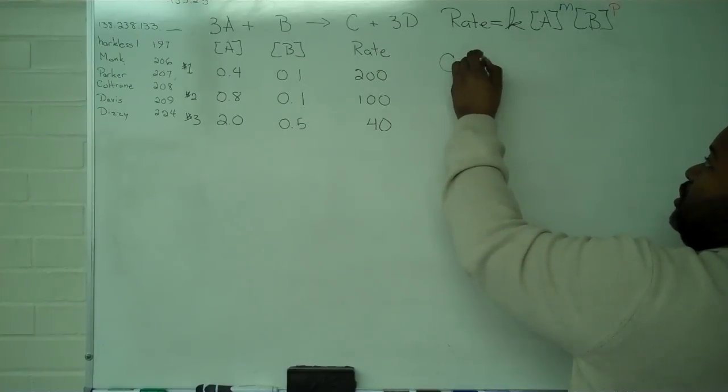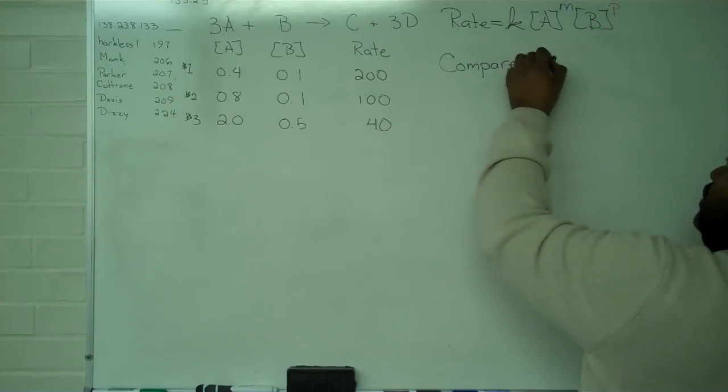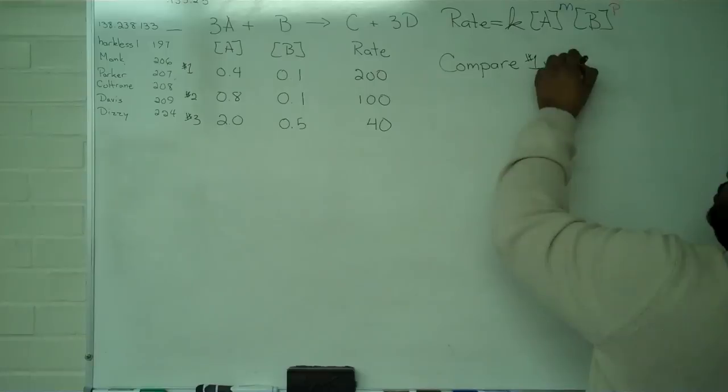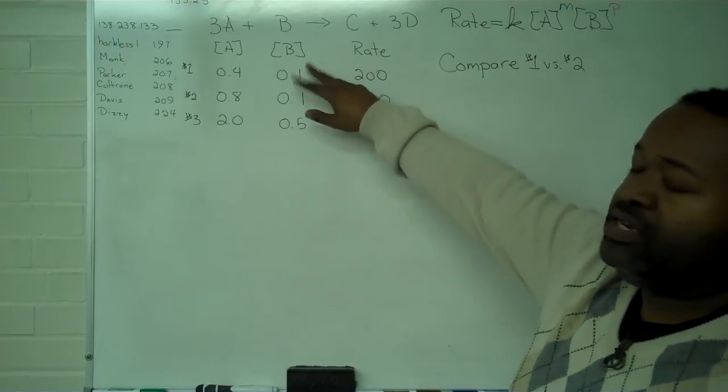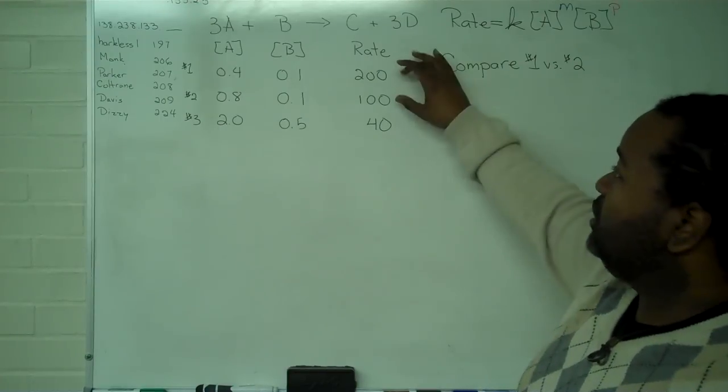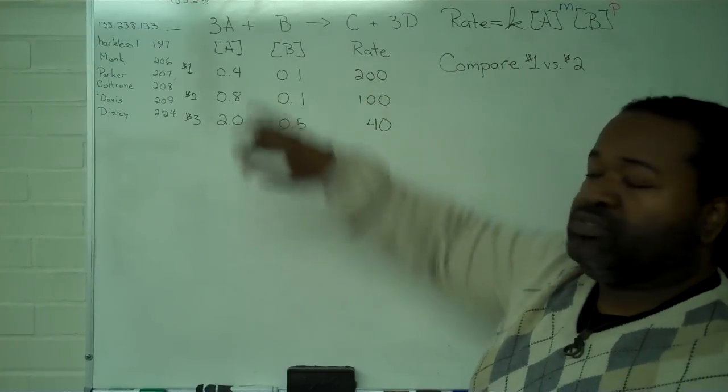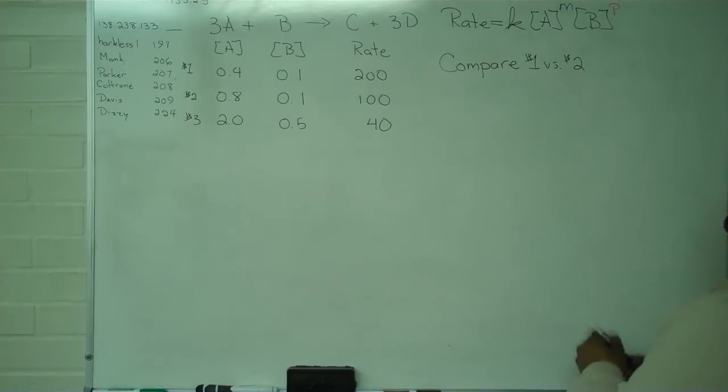We'll start off by comparing number one versus number two. Data set one and data set two shows that component B does not change in concentration, so any change in the rate has to be the result of a change in the concentration of component A. That information will allow us to determine a value for M.